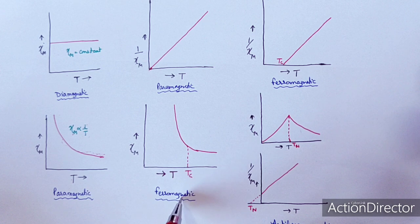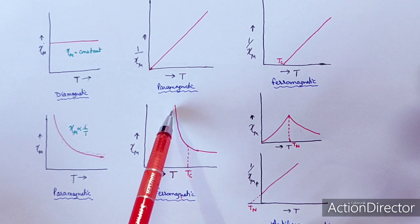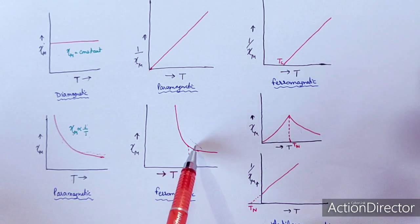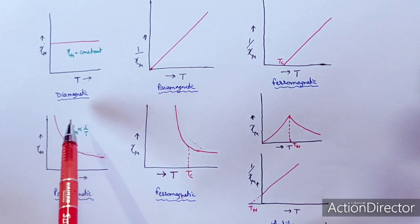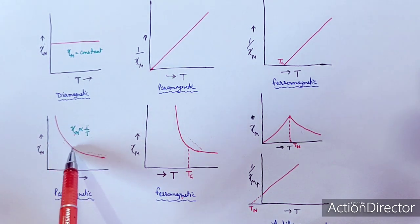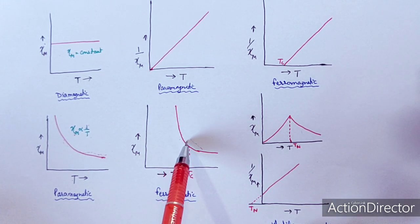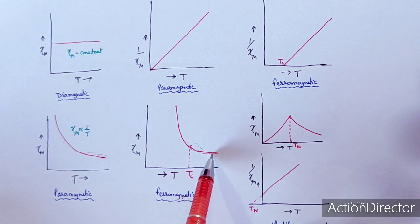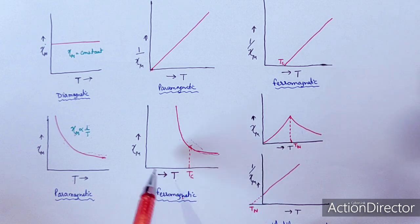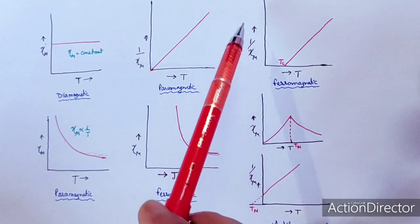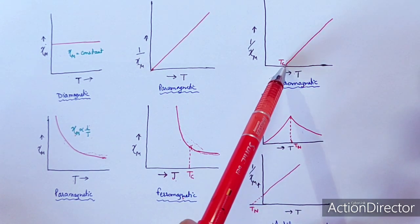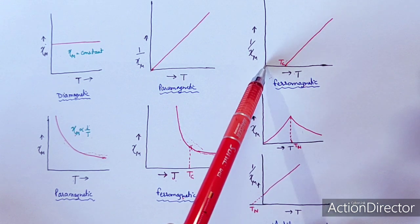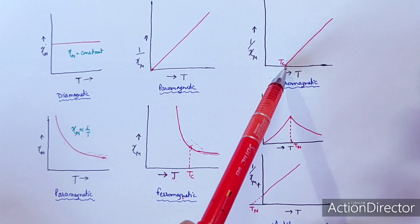For ferromagnetic material, as temperature increases the value of χm decreases sharply and then more slowly after a certain point. The plot of T versus 1/χm gives a straight line but it does not originate from zero — it has a non-zero intercept. For antiferromagnetic material, as we increase temperature its χm first increases, and after a certain temperature it decreases with increase in temperature.